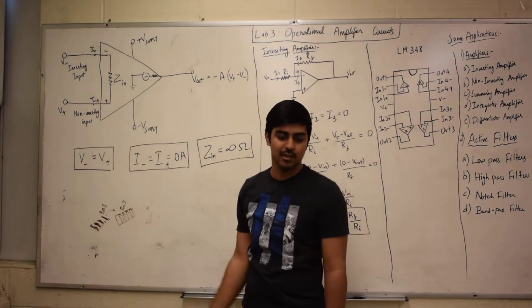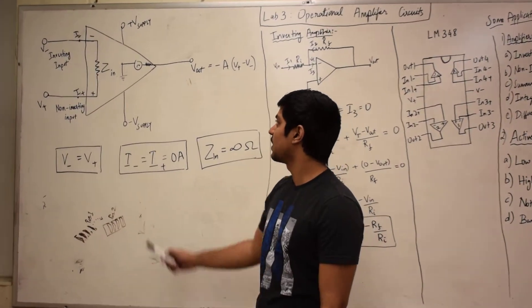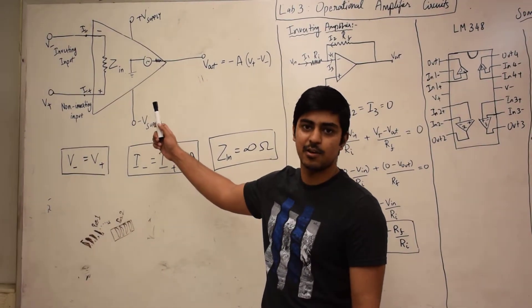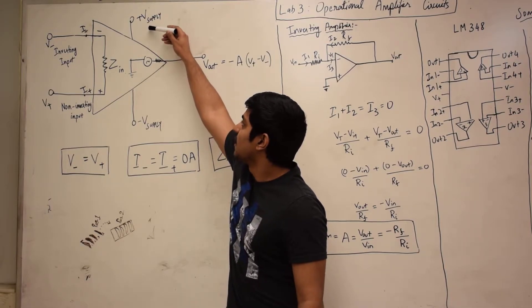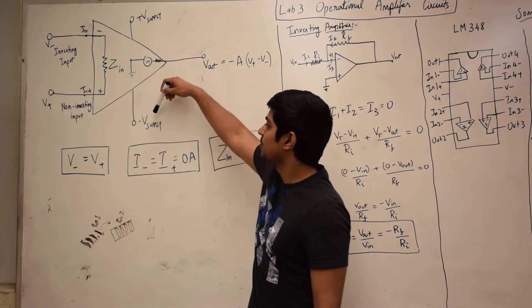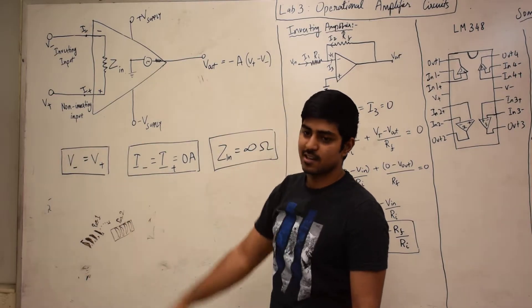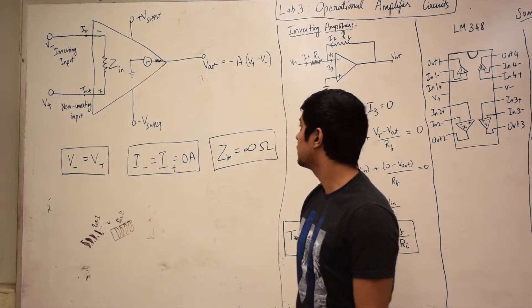The op-amp is called an active electronic component because it also has a secondary power source. As you can see here, it has a plus V supply and minus V supply, which is an external power source.